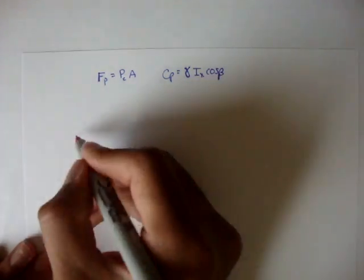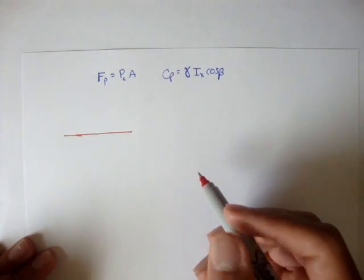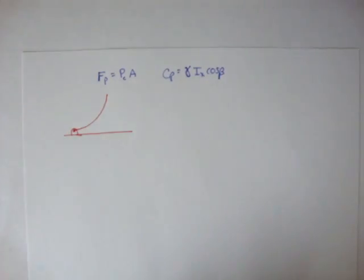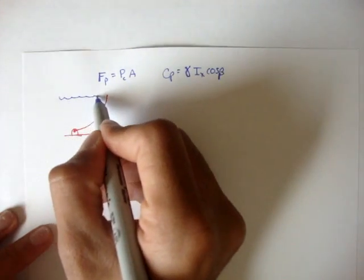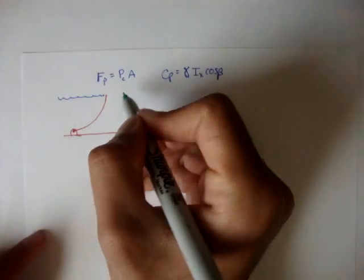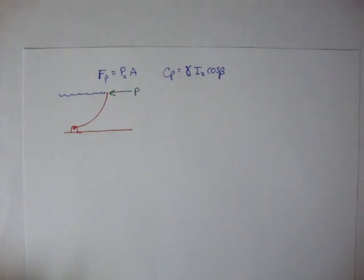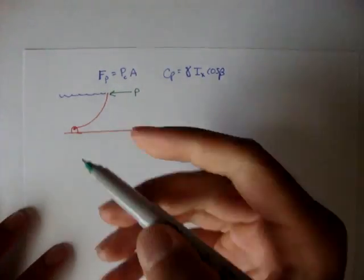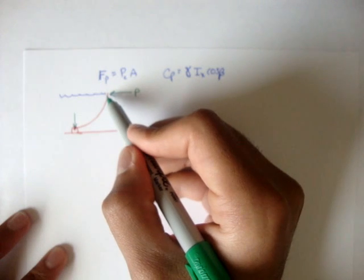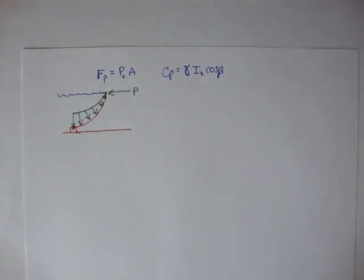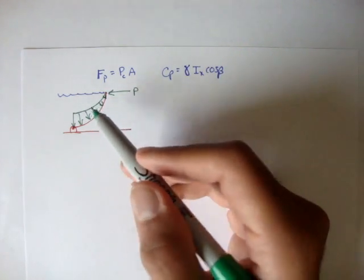Say we had a ground here, and then a little hinge, and then a curved gate holding water. There's a force P pushing against this gate to keep it from falling down and letting the water run past. We know that the water on this curved surface creates a pressure distribution — the pressure at the bottom is obviously the greatest, and near the surface it's almost zero. That's what the pressure distribution looks like on the surface.